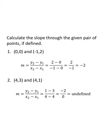Calculate the slope through the given pair of points if defined. For (0, 0) and (-1, 2): the slope formula is y2 minus y1 over x2 minus x1. Substituting: two minus zero over negative one minus zero. Two minus zero is two; negative one minus zero is negative one. Two divided by negative one gives a slope of negative two.